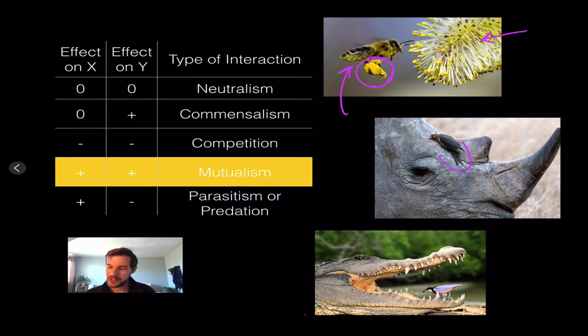And then the next example is this oxpecker and the rhino. The oxpecker will pick off little parasites that are on the rhino. So oxpecker will get food so it's benefiting and the rhino is getting like a spa treatment from the oxpecker. Same thing happens with this relationship with this alligator or crocodile. Can't, don't know which one it is. And then this little bird so the bird will go in and will give a little dentist exam to this alligator crocodile and the bird gets food and the alligator crocodile gets a little cleansing.